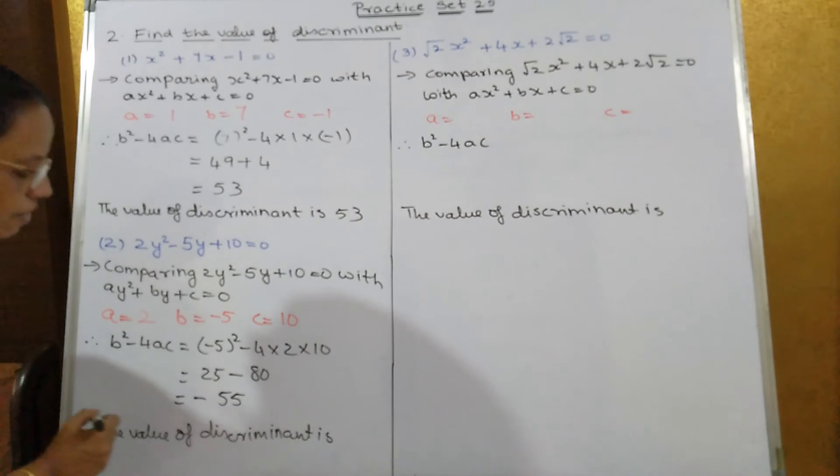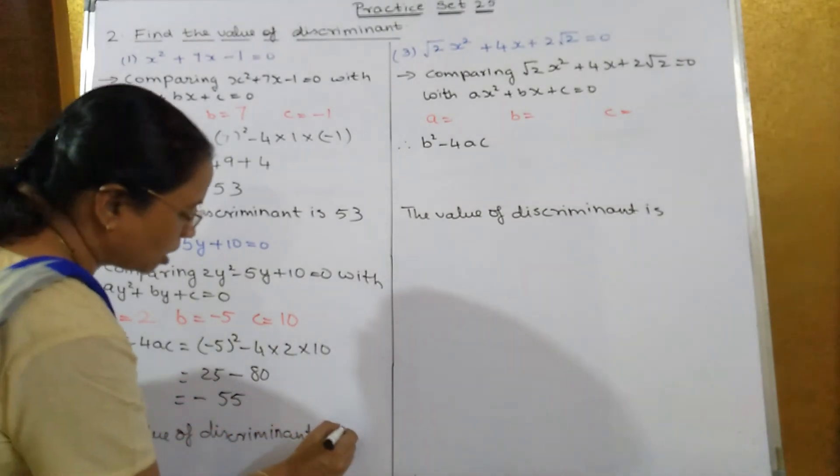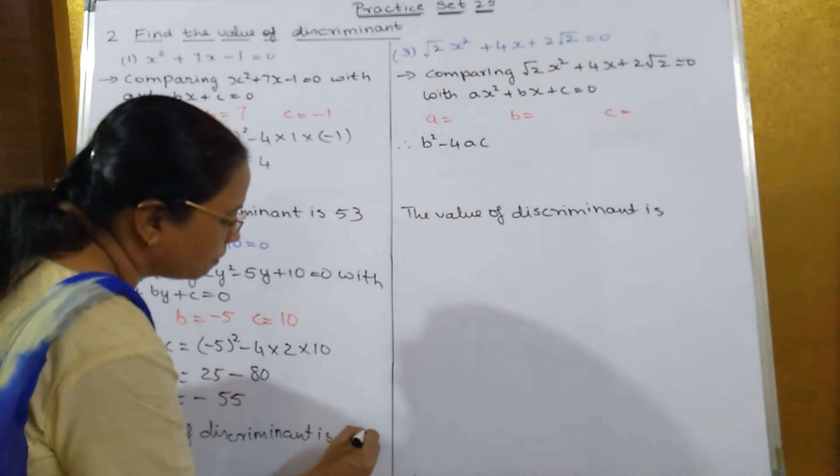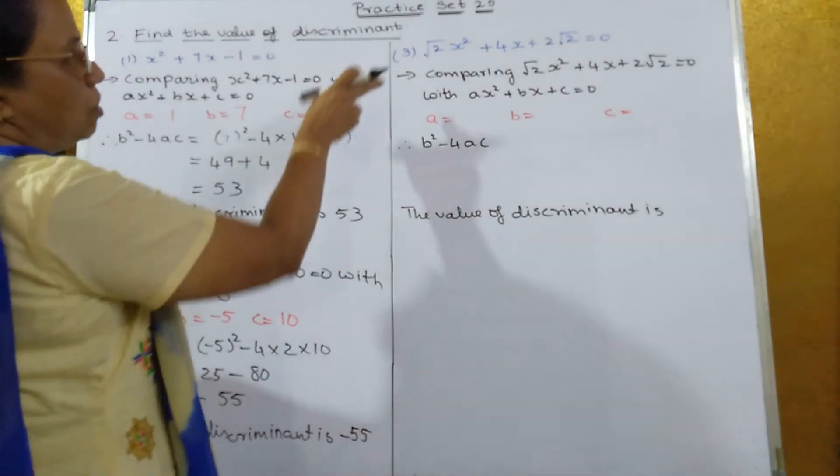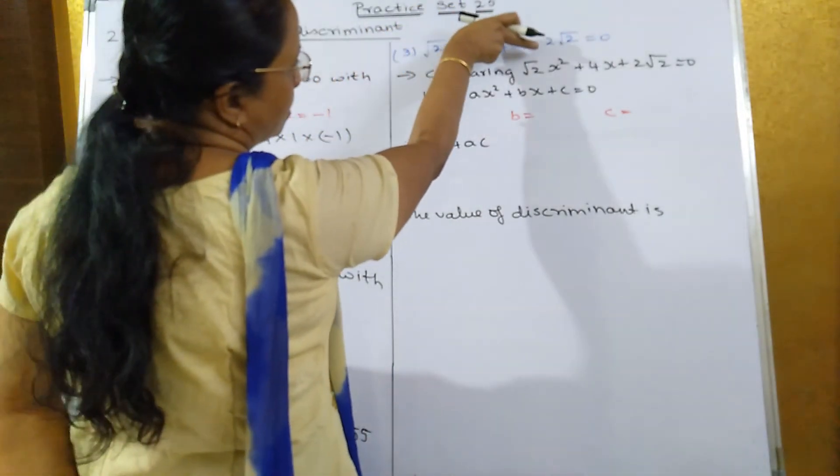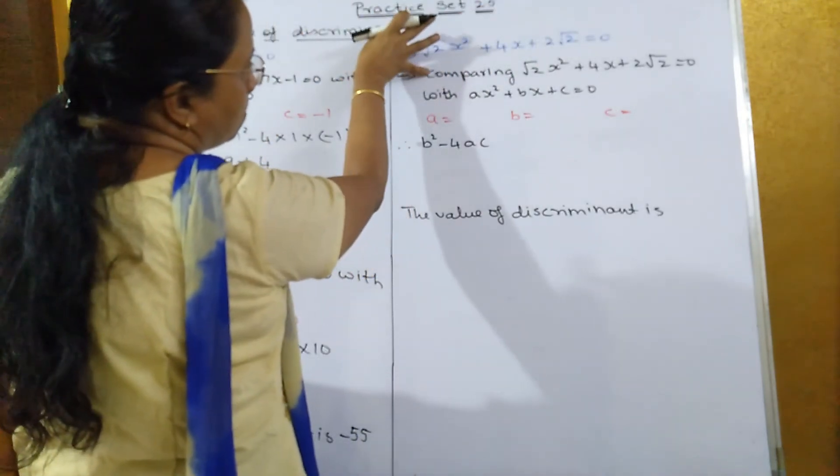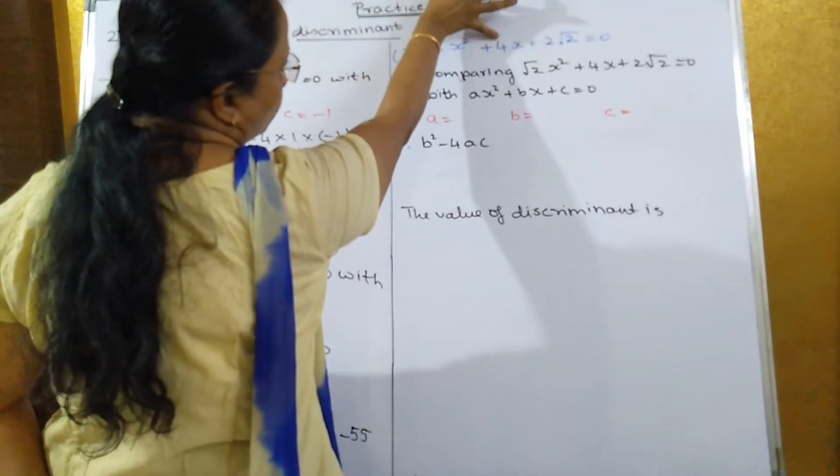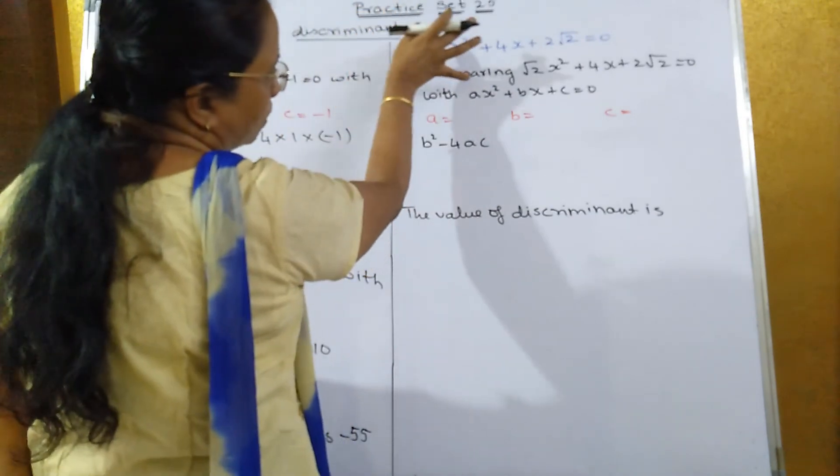So 25 minus 80 is how much? Minus 55. So the value of discriminant over here is how much? Minus 55. Third sum: √2x² + 4x + 2√2 = 0. When you compare √2x² + 4x + 2√2 = 0 with ax² + bx + c = 0.